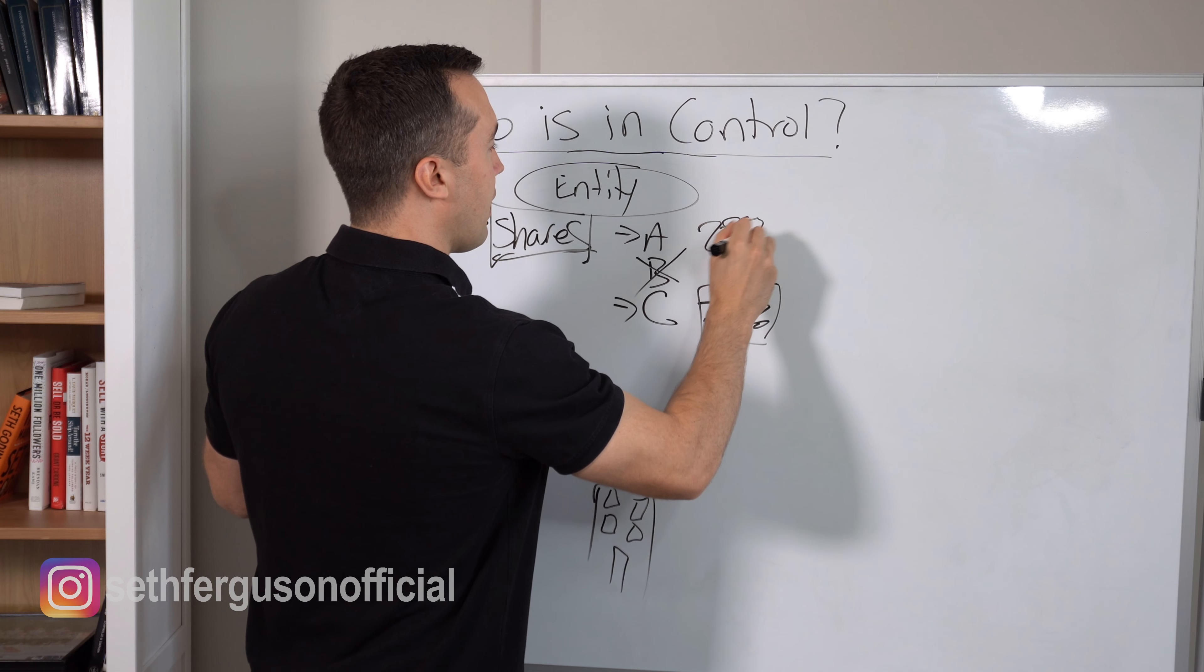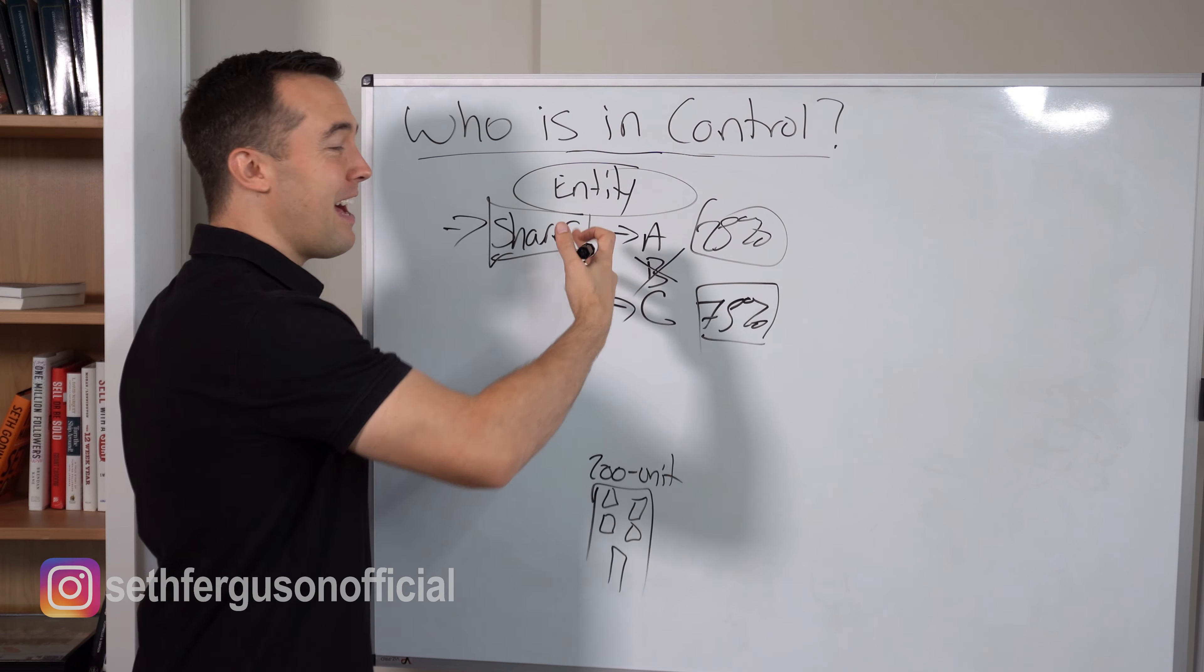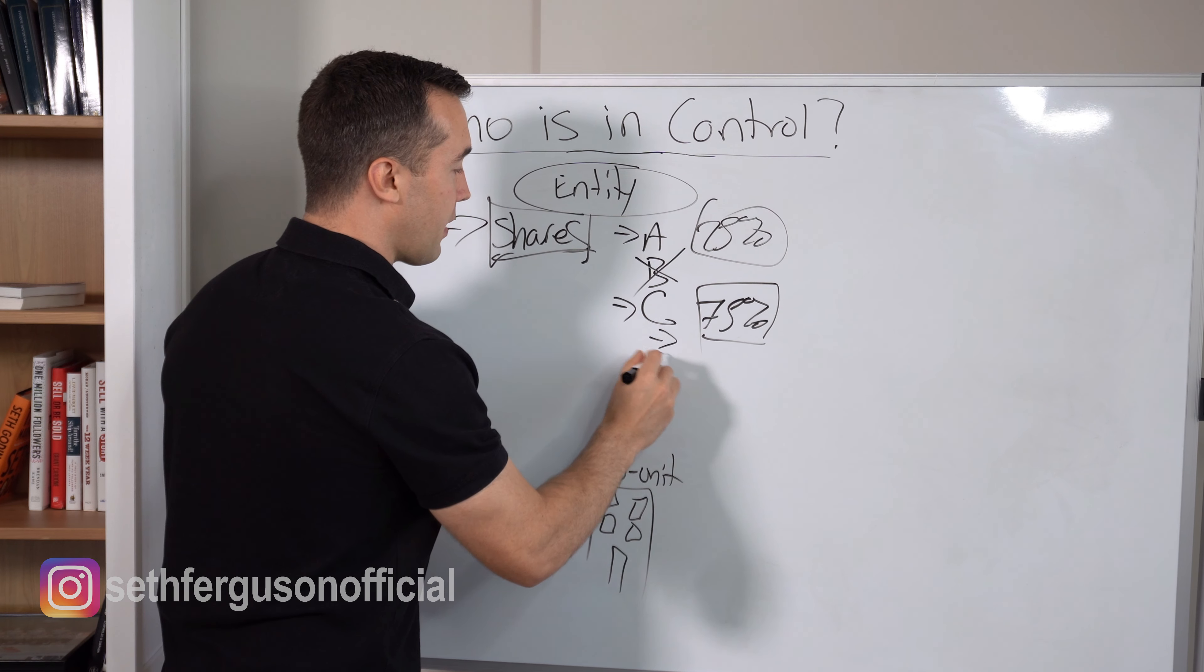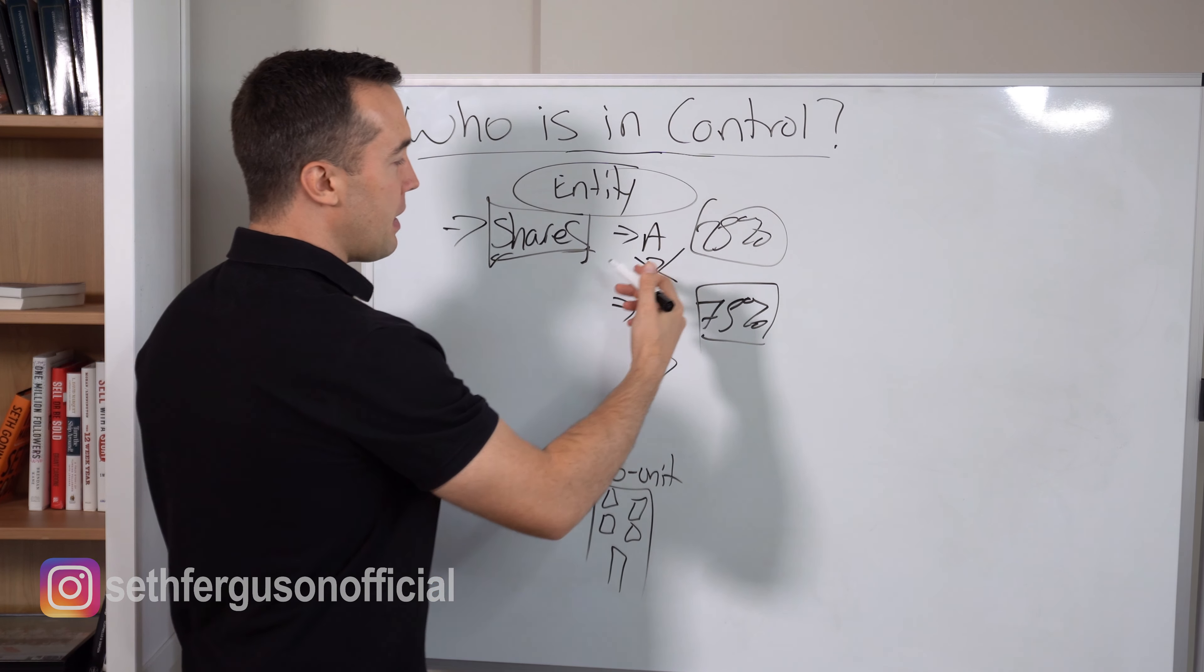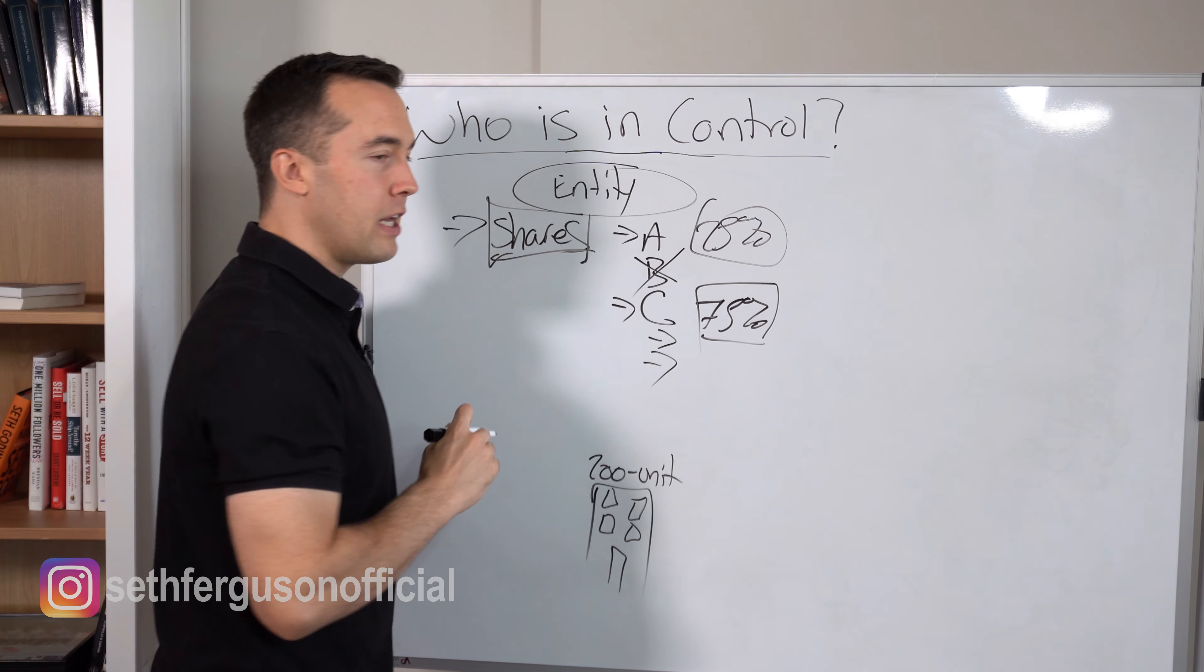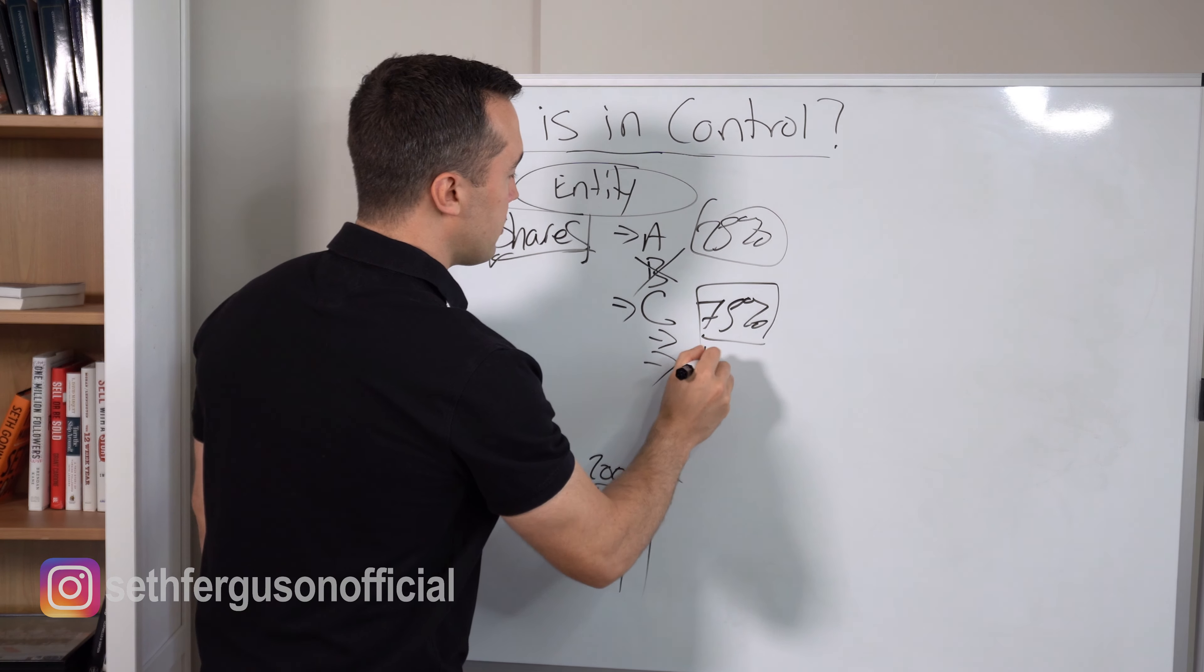For instance, maybe a Class C share will have 25% of the profits, and then a Class A share will get 25%. Maybe a Class C share will have a preferred return and the Class A share will not. And maybe we even have two different classes of Class C shares. So maybe one class is participating in the upside, it's more equity, and maybe another class of Class C shares is getting a straight 10% return on their investment.